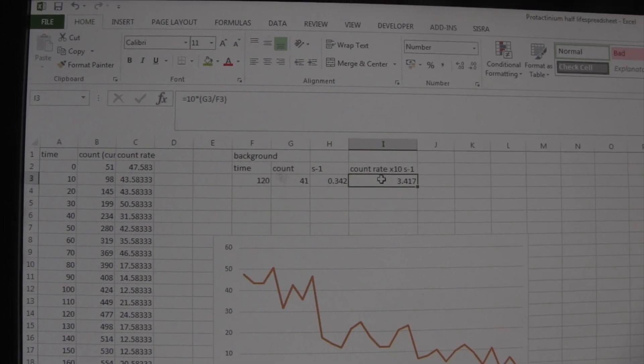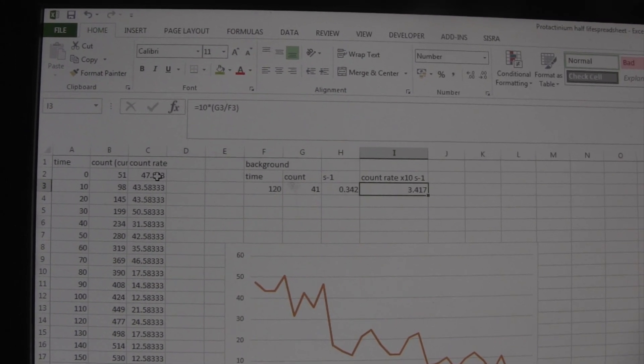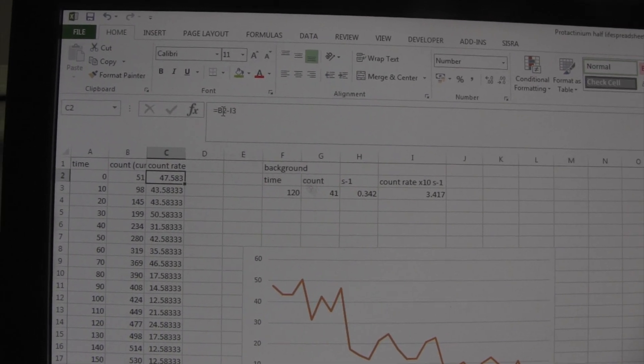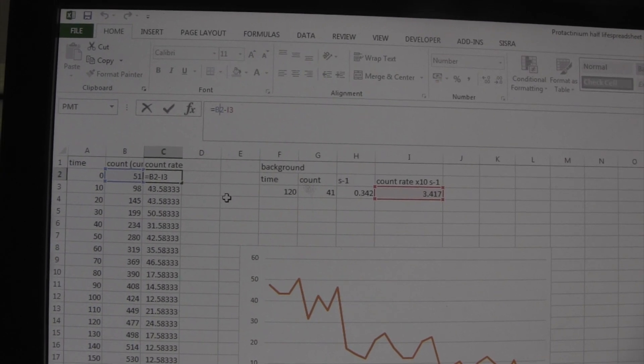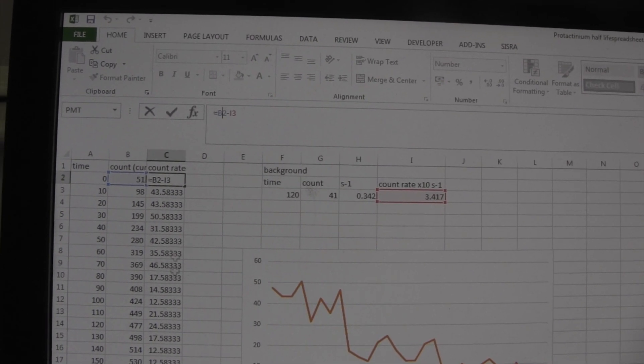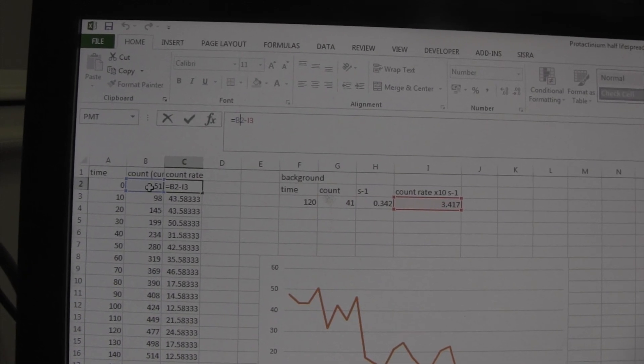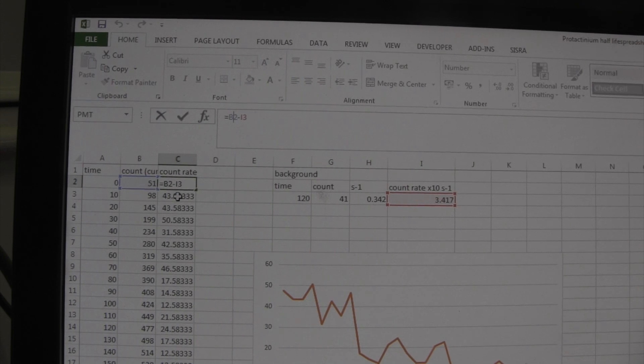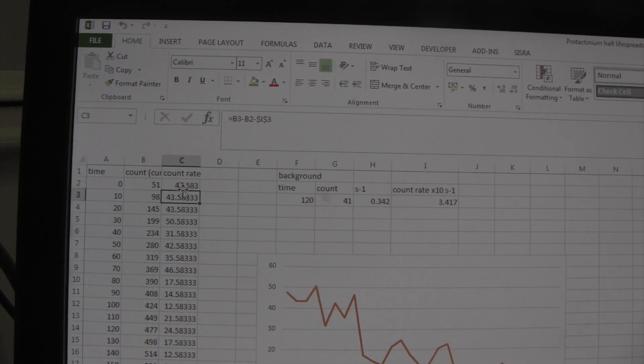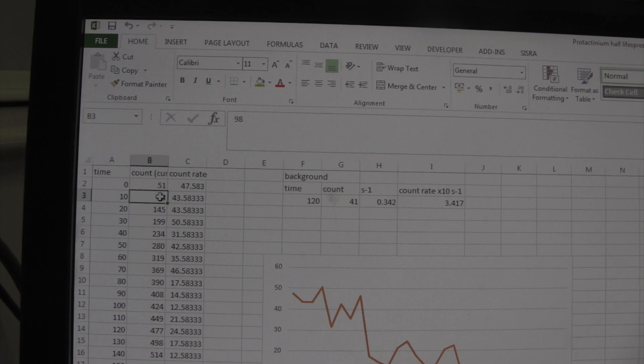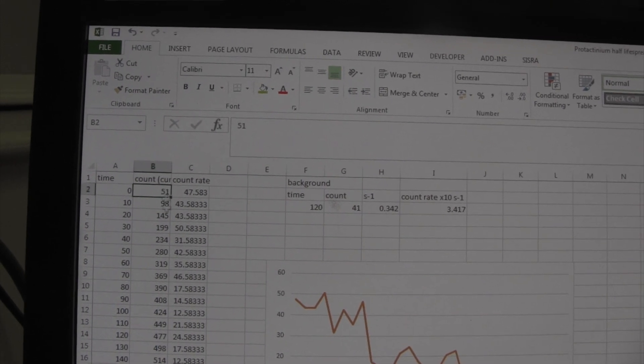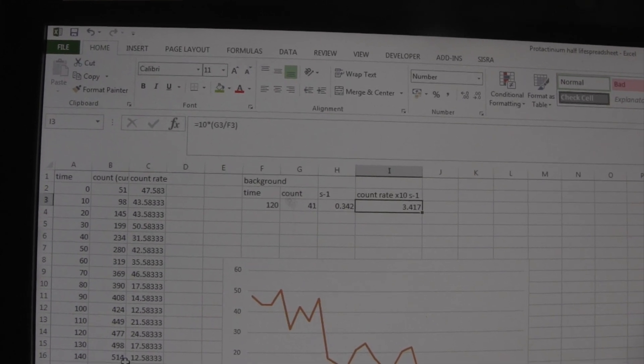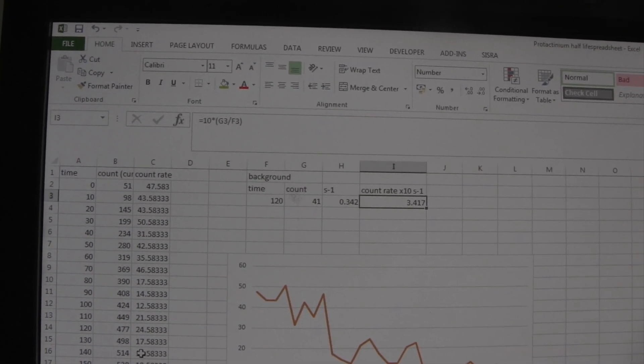And I've then used this, and I've subtracted that background radiation count away from this. So, this column here is the count over the ten second period, subtract the background radiation count. And then the following cell is the difference between the current count and the previous count, subtract this background radiation count, and so on. So, it's given me how that count rate changes over time.